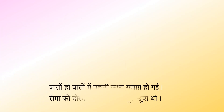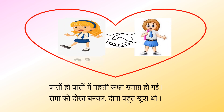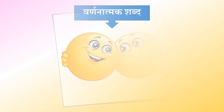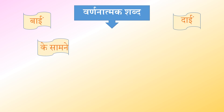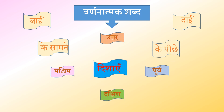बातों ही बातों में पहली कक्षा समाप्त हो गई। रीमा की दोस्त बनकर दीपा बहुत खुश थी। तो बच्चों, आज हमने दोस्ती पर एक सुन्दर कहानी देखी और सुनी है। और हमने कुछ वर्णनात्मक शब्दों के बारे में भी सीखा है — जैसे कि दाईं, बाईं, के सामने, के पीछे, और दिशाओं के बारे में भी — जैसे कि उत्तर, दक्षिण, पूर्व, पश्चिम।